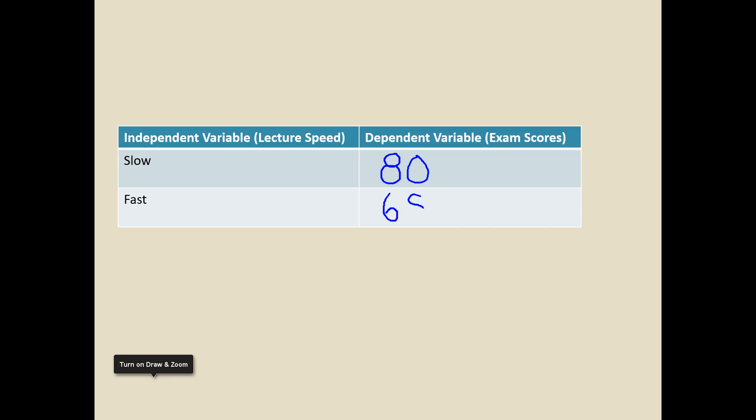Now, it might be easy to assume that it was the slow lecture speed that caused higher exam scores. But we have to be really cautious now. And the problem is because we didn't randomly assign students to this class or this class. Remember, in this scenario, we let students choose which class they wanted to be in.